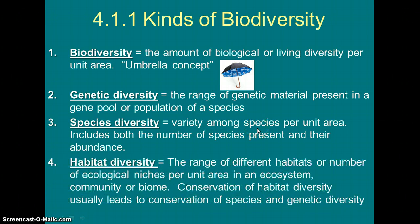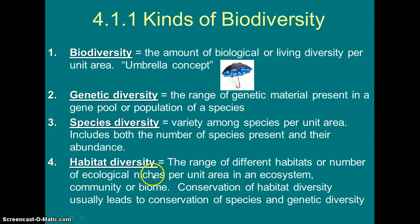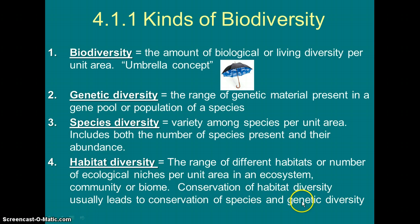Lastly, habitat diversity is something somewhat new to us, but you were noting it when talking about your JAR ecosystems. In the natural world, there's a lot of habitat diversity, and this is a good thing. It refers to how many different habitats or types of niches are available across a range of area — different places for organisms to live, different types of biomes. We want to conserve habitats because that's where organisms live. We also try to conserve genetics and even species themselves. These are all important definitions, so make sure you jot them down.